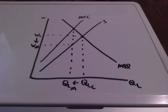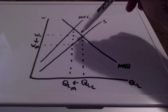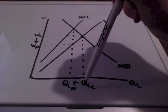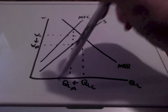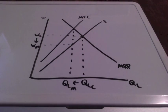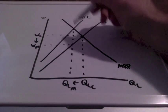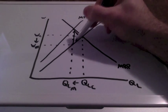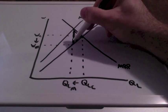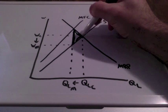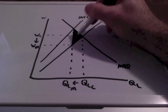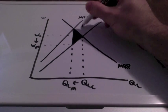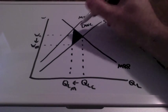Because the monopsony does not pay workers at the competitive, socially optimal level, and because they employ less than the socially optimal level, we have inefficiencies. This entire area between the quantity for the monopsony and the quantity for the competitive, socially optimal level represents deadweight loss.